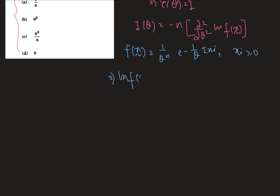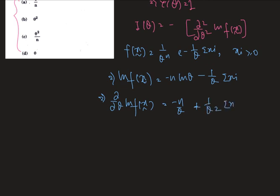Now ln f(x) curve - there is a problem if we write f(x) curve, there is no need to write minus n, there is only minus 1 required. So ln f(x) curve is minus n ln theta and then we get 1 by theta sum over xi. Now del del theta ln f(x) curve is minus n by theta and here we get 1 by theta square sum over xi.